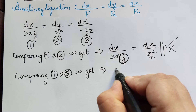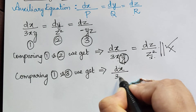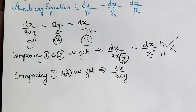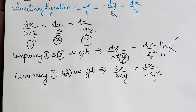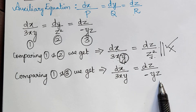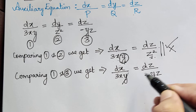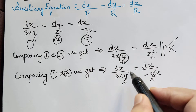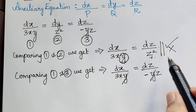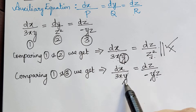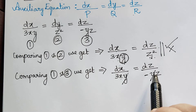We shall compare each of these equations to obtain the general solution φ(u, v) = 0. Comparing equations 1 and 3: equation 1 is dx by 3xy, and equation 3 is dz by negative yz. I observe that y and y get cancelled, and we are left with dx by 3x is equal to dz by minus z, which can now be easily integrated.